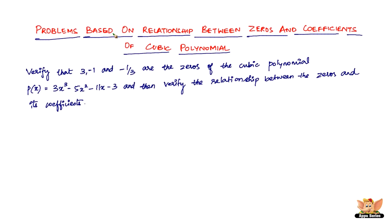In this video, let us solve problems based on the relationship between the zeros and the coefficients of a cubic polynomial. The problem reads: verify that 3, minus 1, and minus 1 by 3 are the zeros of the cubic polynomial P(x) equals 3x cubed minus 5x squared minus 11x minus 3, and then verify the relationship between the zeros and its coefficients.